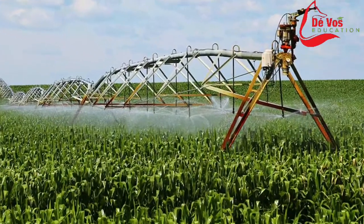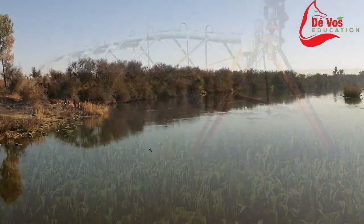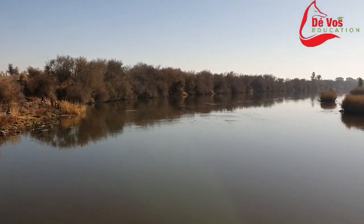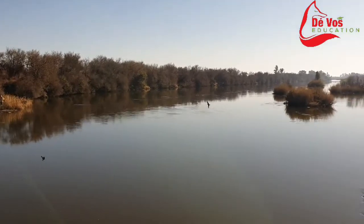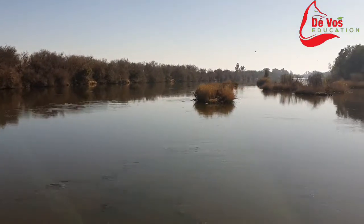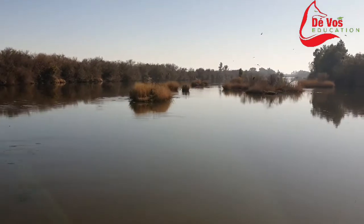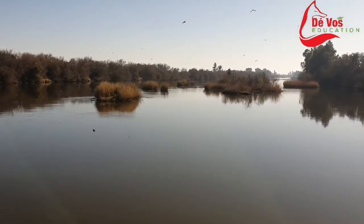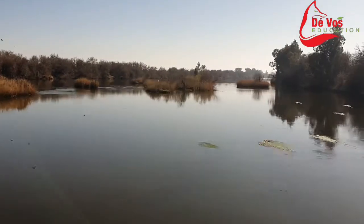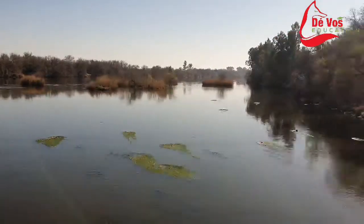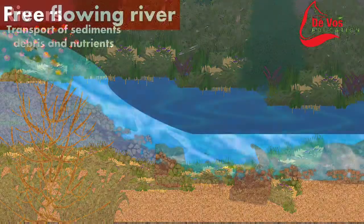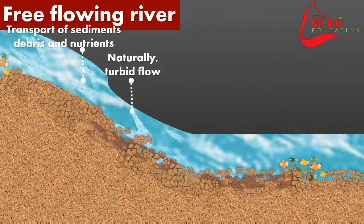Rivers drain nearly 75% of the earth's land surface, and rivers provide excellent habitat and food for many of the earth's organisms. Humans often choose to live near rivers because the river can be used to wash themselves, also to water vegetables and cereals like maize that most people grow in the villages for food.